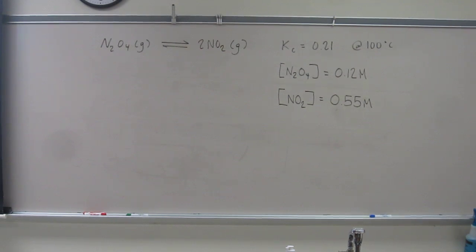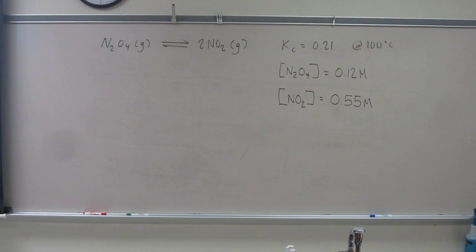So let's try this one. We're going to compare Q and K to determine the reaction direction this time. For the reaction that's pictured on the board, at what point during the reaction does the concentration of N2O4 equal 0.12 molar, and the concentration of NO2 equal 0.55 molar.